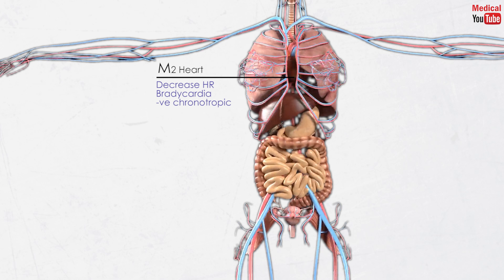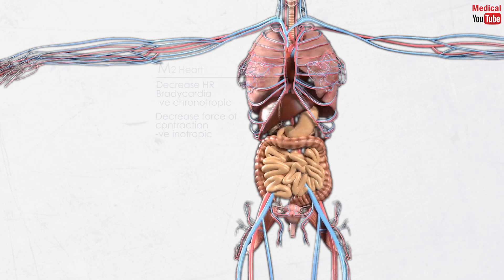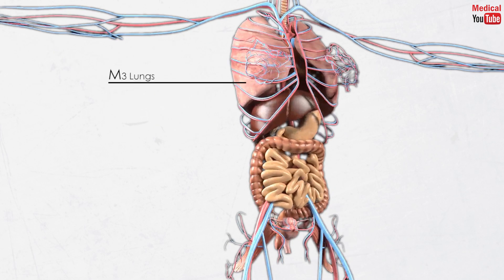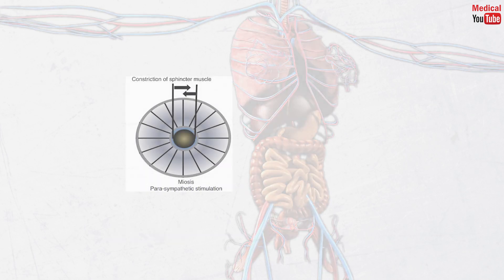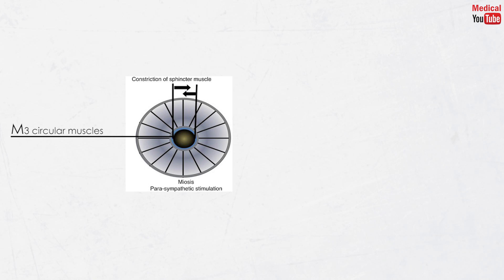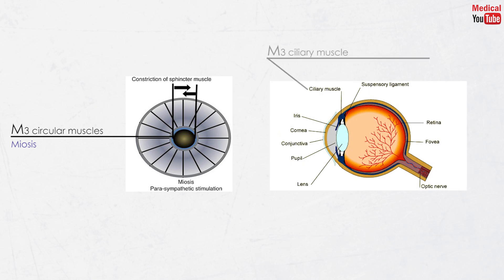M3 is located in the lungs, responsible for bronchoconstriction and increased mucous secretion. In GIT smooth muscles, it increases tone and motility. In the detrusor muscle of the urinary bladder, it is responsible for contraction of the detrusor muscle causing urine evacuation. In the eye, it is located in the circular muscles, responsible for contraction causing miosis, and in the ciliary muscles, responsible for lens accommodation to near vision.